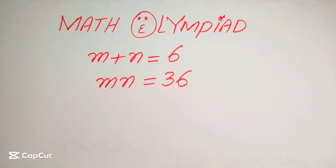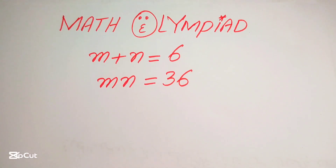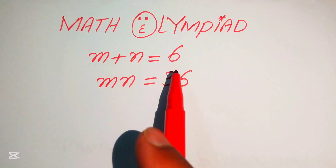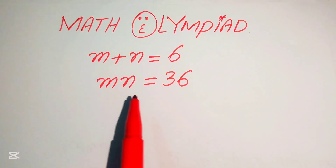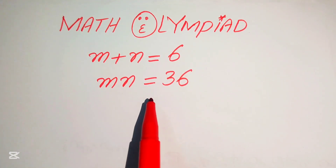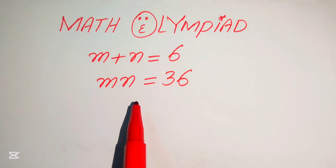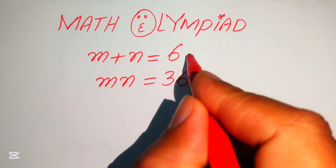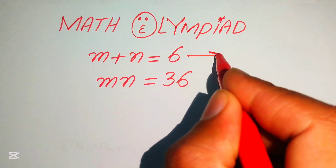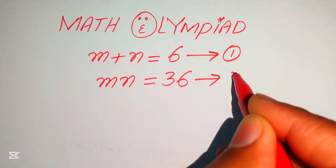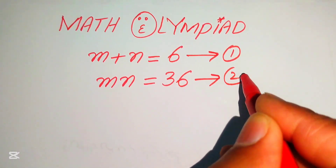Hello everyone, welcome to solve this nice math and algebra problem. Here we have m plus n equals to 6 and m times n equals to 36, and we solve this problem for the values of m and n. We call the first equation number 1 and the second equation number 2.